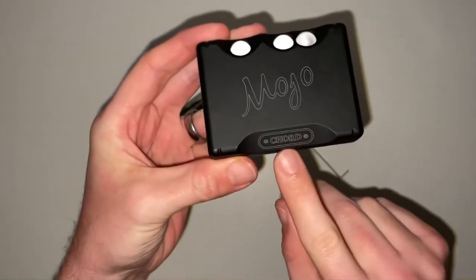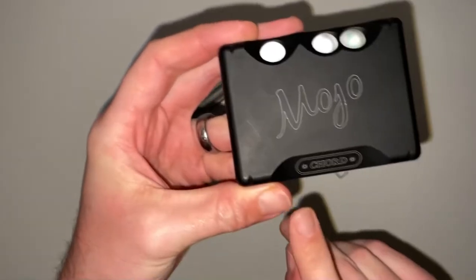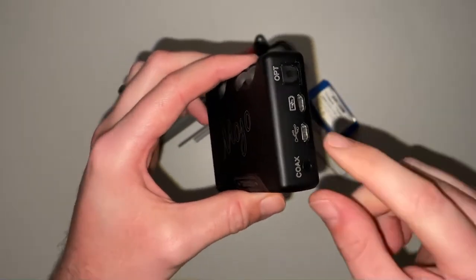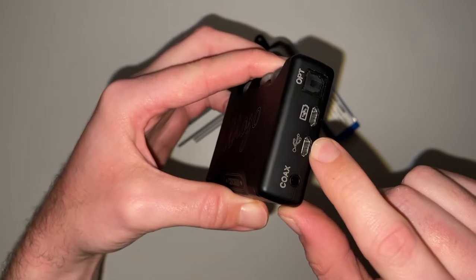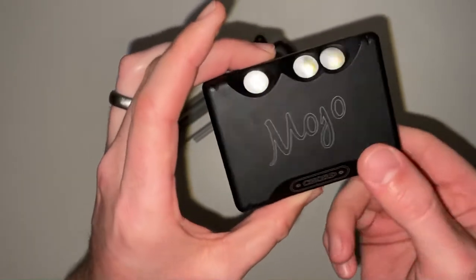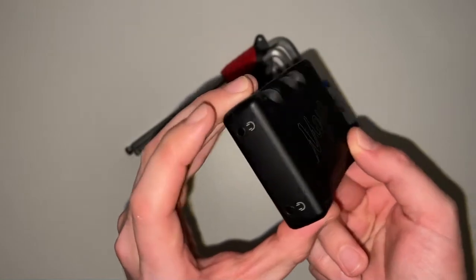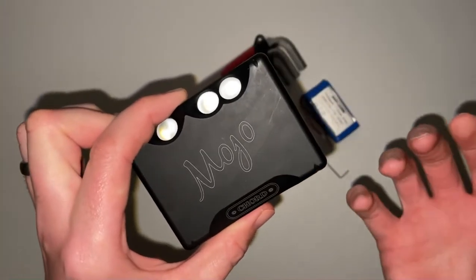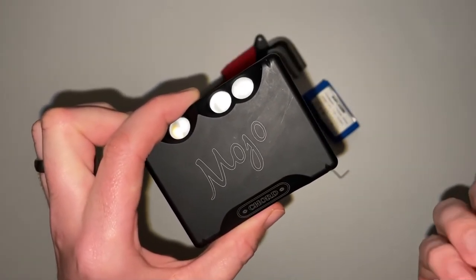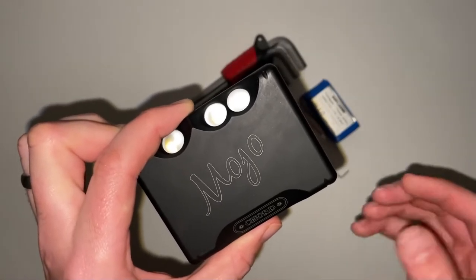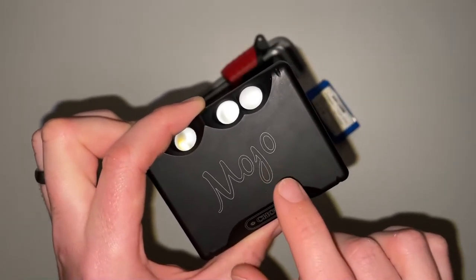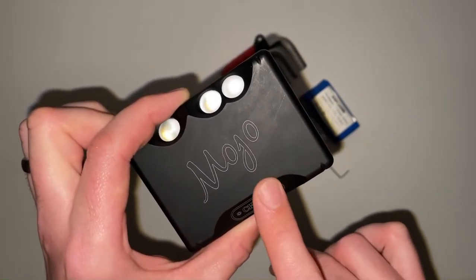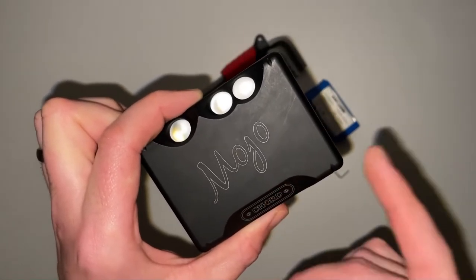Hello, the Chord Mojo is a digital audio converter that I use with my mobile phone through a USB connection on this side and headphone out on that side. It's a good processor for the music that's already stored in your phone and takes the digital information that's in your phone and converts it to an analog signal using what's called an FPGA, a field programmable gate array, and we'll see it inside.